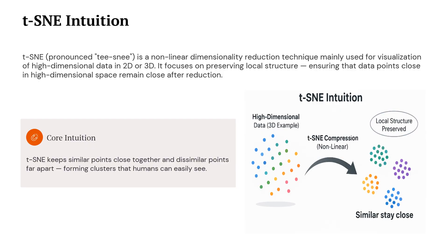Let us talk about t-SNE. t-SNE is a non-linear dimensionality reduction technique mainly used for visualizing high-dimensional data in 2D or 3D. The key idea is that t-SNE focuses on preserving local structure — if two data points were close to each other in the original high-dimensional space, t-SNE tries to keep them close even after reducing the dimensions. t-SNE keeps similar points together and pushes dissimilar points apart, naturally forming clusters that humans can easily understand and interpret.